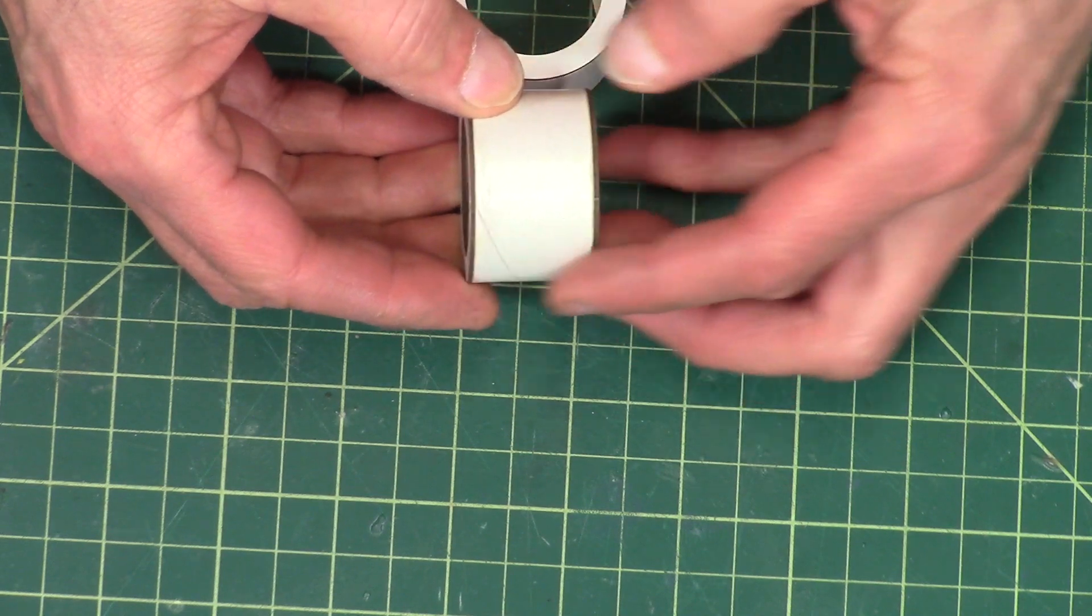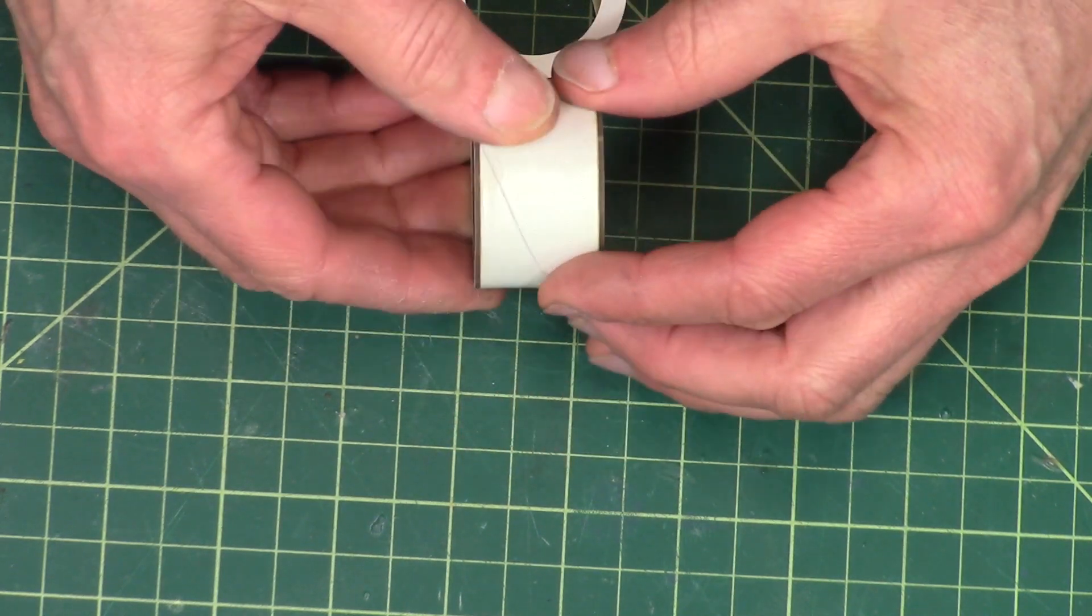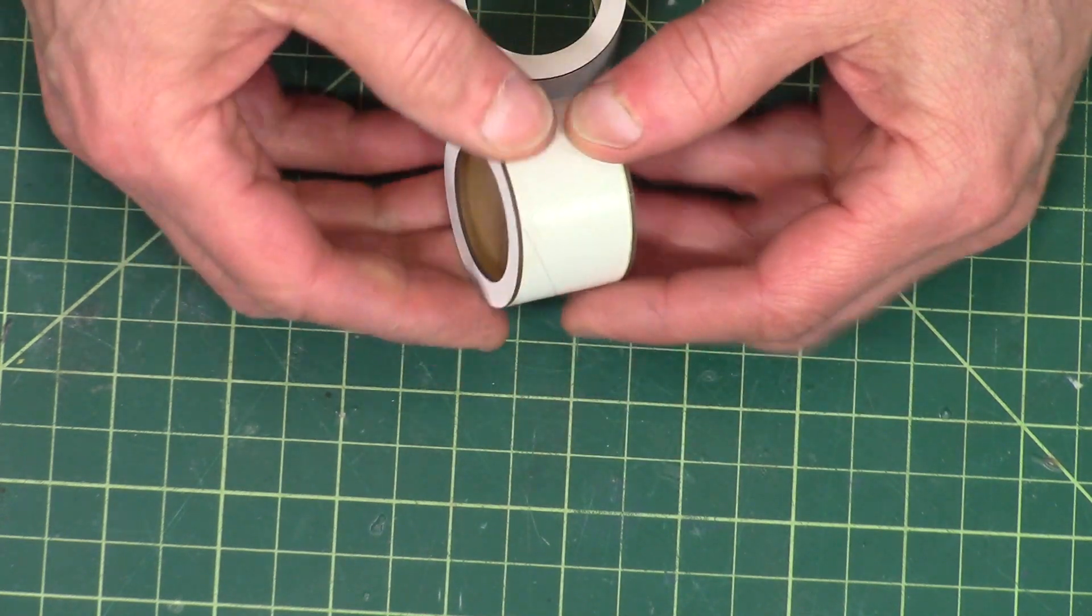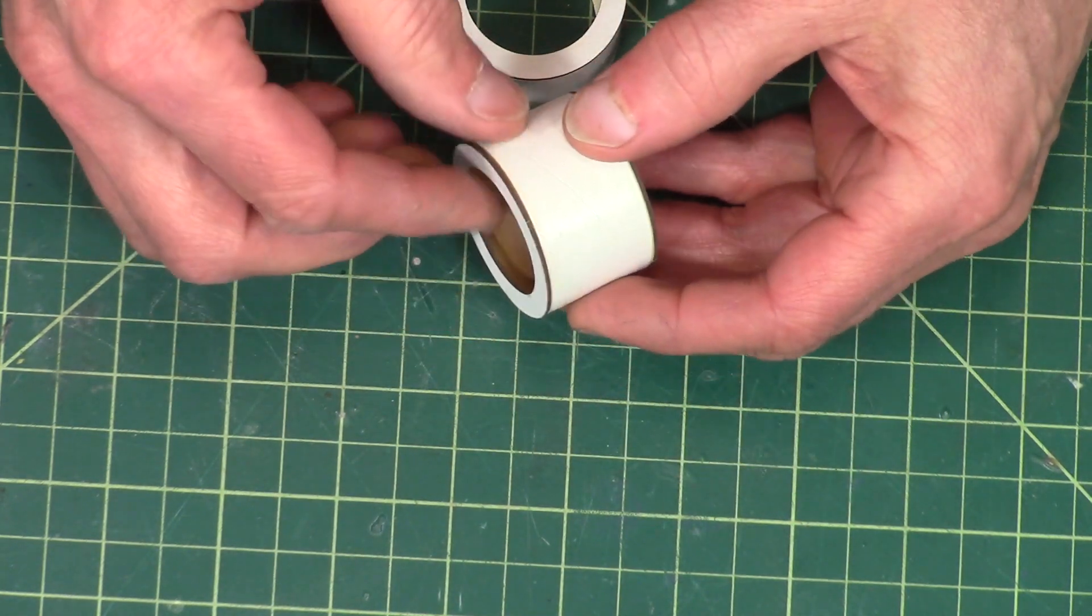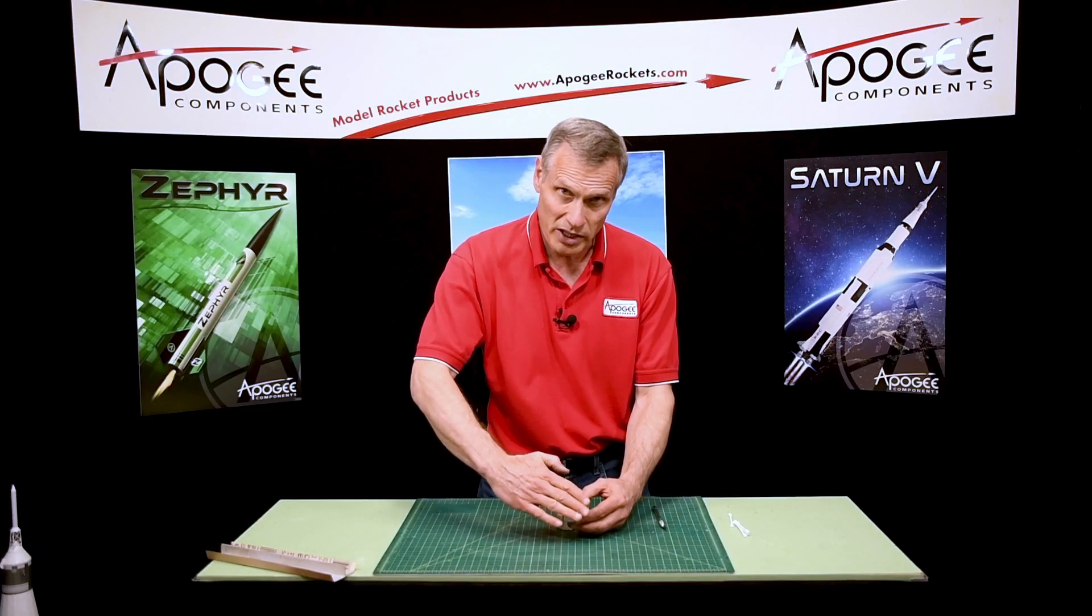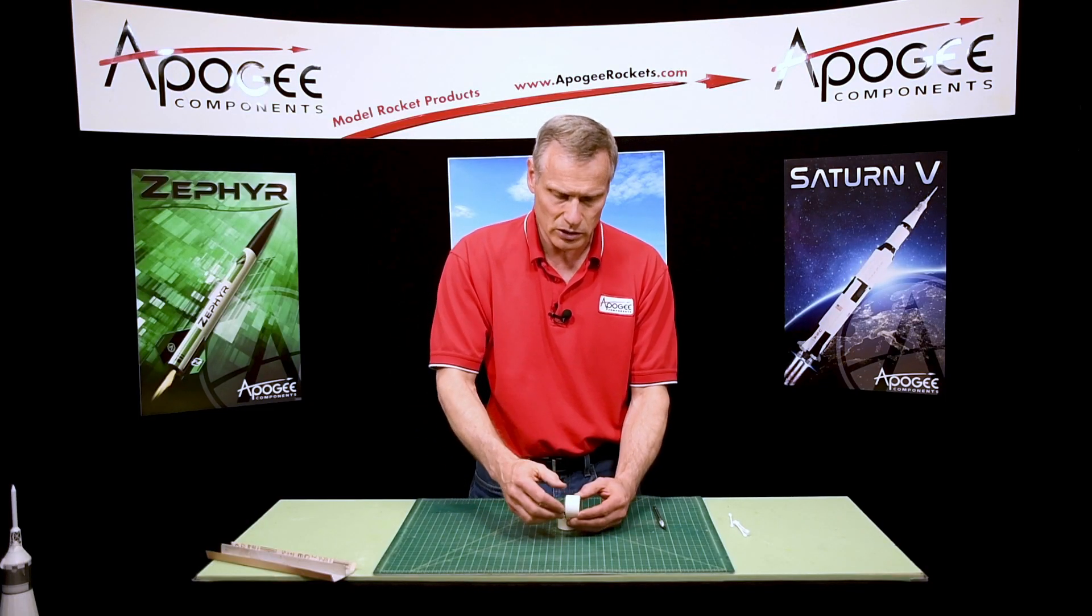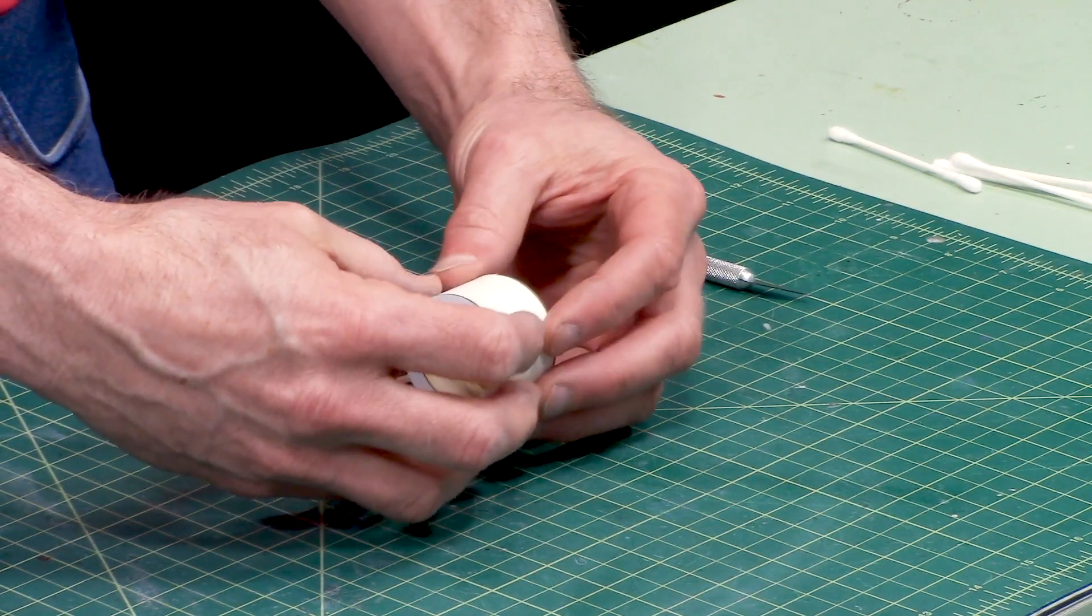Our next step is to feel along the edges here, and anywhere where the ring overhangs the side of the tube, we have to sand that off because we want it nice and flat. These are where the fuel tank tubes get glued on, so we're feeling on the edges.